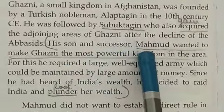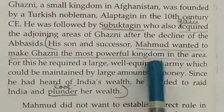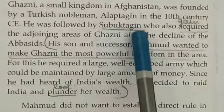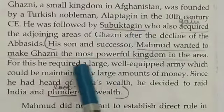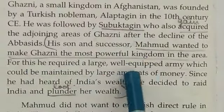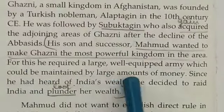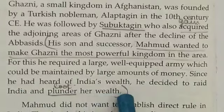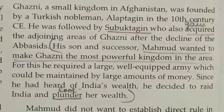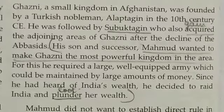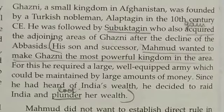Subhukthagan's son and successor, Mahmood, wanted to make Ghazni the most powerful kingdom in the area. For this, he required a large, well-equipped army — meaning an army with sufficient equipment, supplies, and abilities — which could only be maintained with large amounts of money.